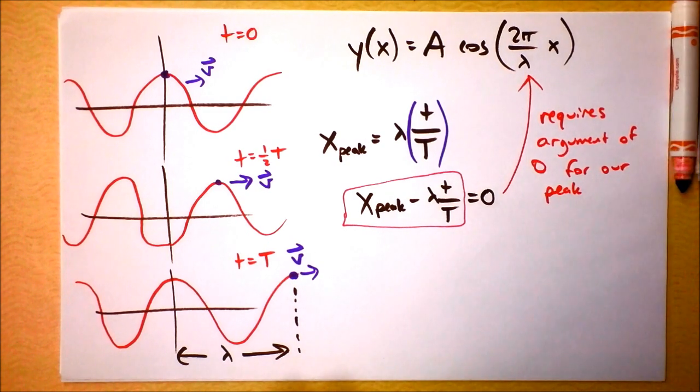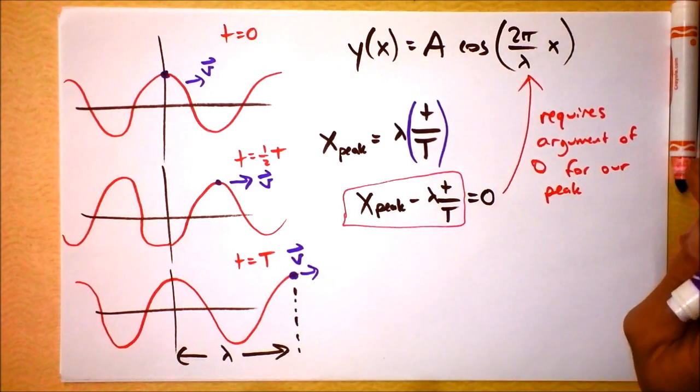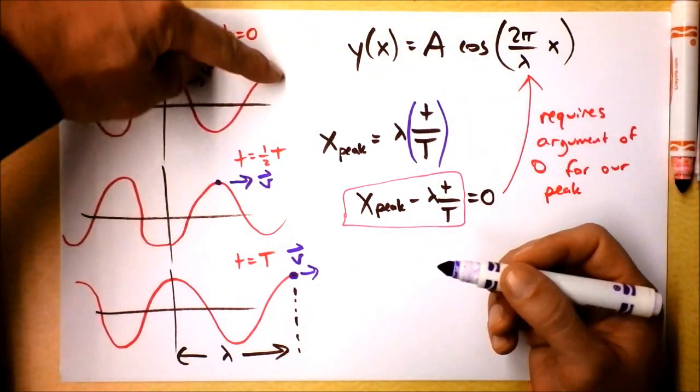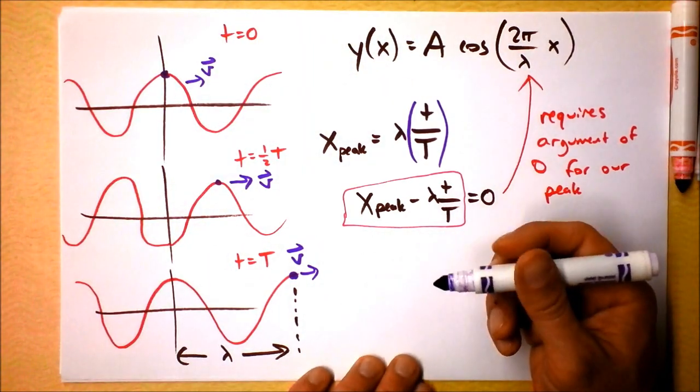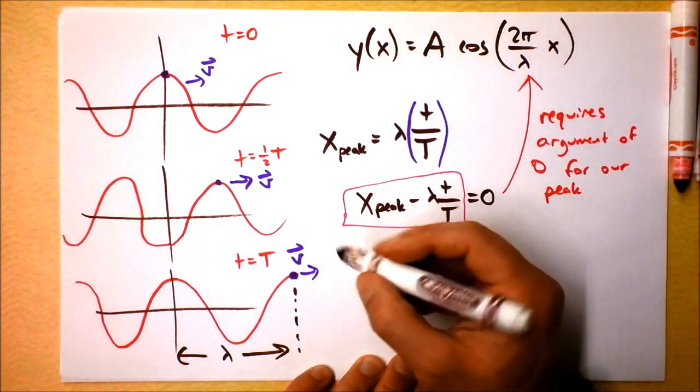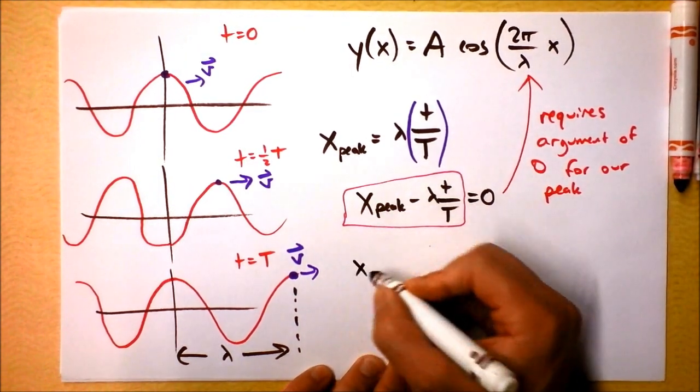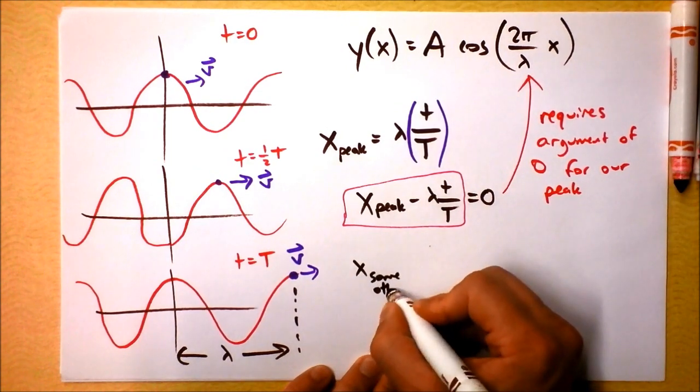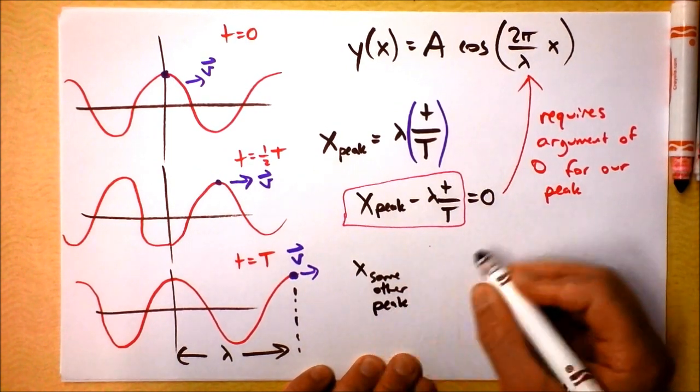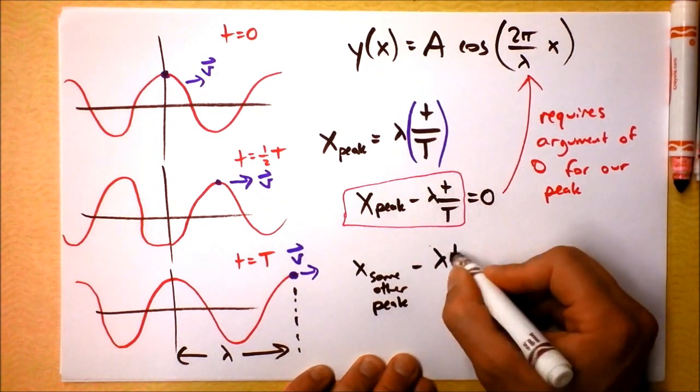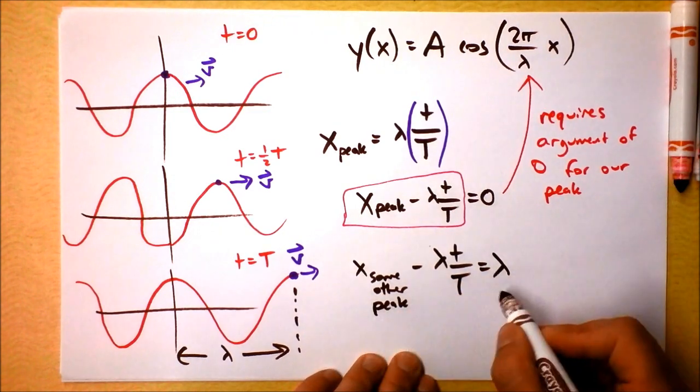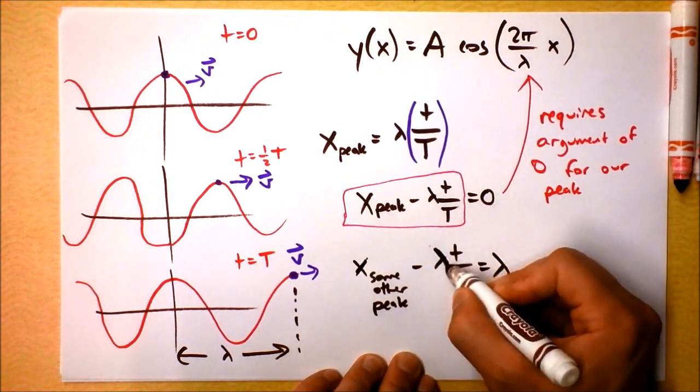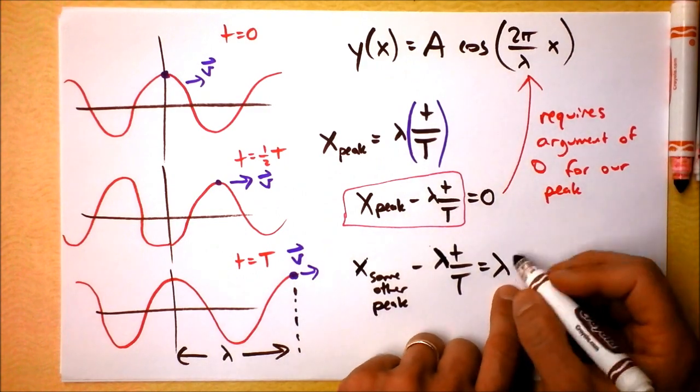But I can show it one more way. What if we want to consider the peak that was originally at lambda, this peak right here? This peak was originally at lambda. Now it's going to be at two lambda. But we need to show that it's a peak there also. So we could say, we could write this equation, x some other peak minus lambda t over t is equal to lambda, or x some still other peak. If we wanted to take some other peak additionally, we could say it's at n lambda, any of these.